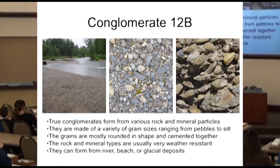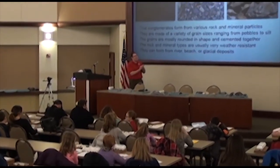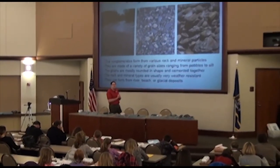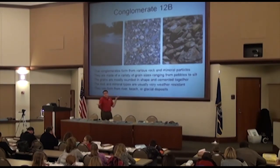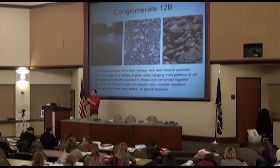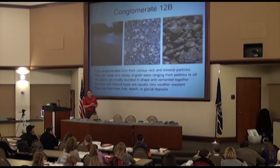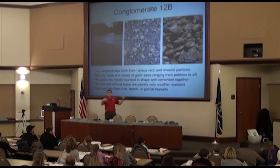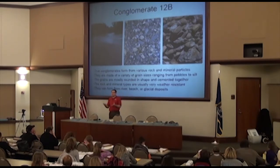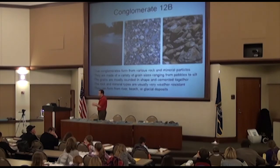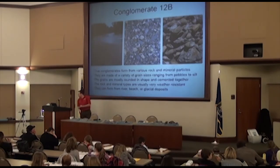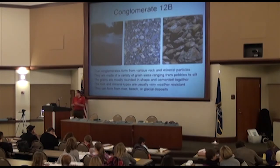The way conglomerate looks tells us how it formed. If the pebbles are rounded, it probably came from a beach, river, or glacier deposit — something with water that could tumble and round those pebbles. Whether they're sorted or not, or what size they are, might tell us if it was a fast-flowing river, a little stream, or a beach. We can get clues to what it was like back when it formed based on what those pebbles look like.